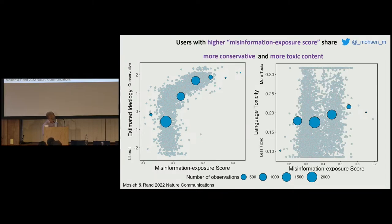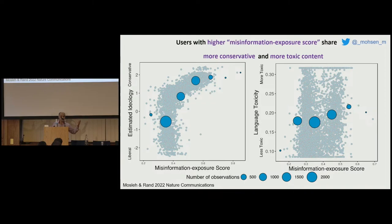Similarly, we looked at the misinformation exposure score and the average toxicity of language use among users in our sample, using the Google Jigsaw Perspective API. We found that being more exposed to misinformation from political elites is also associated with sharing more toxic language on the platform.